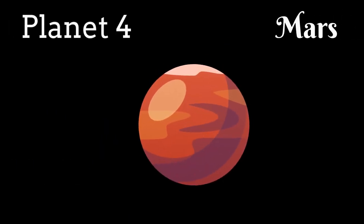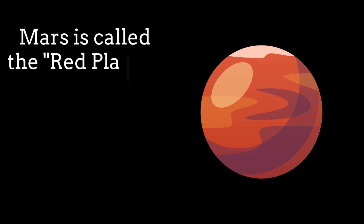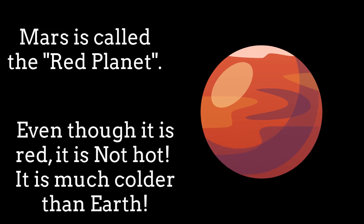The next, 4th planet is Mars. Mars is here, in between Earth and Jupiter. Look at Mars, what color is that? It looks like reddish, orange. Because of its color, Mars is called the red planet. Even though it is red, it is not hot. It is much colder than Earth. The reason in that the Mars is farther than Earth from the Sun.